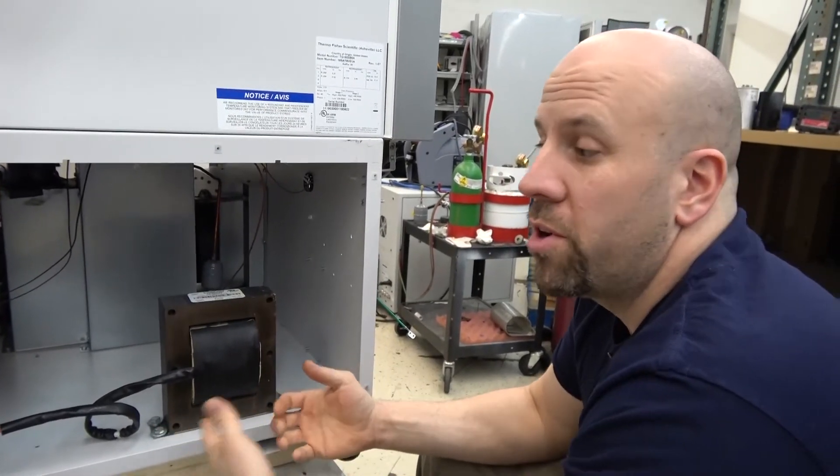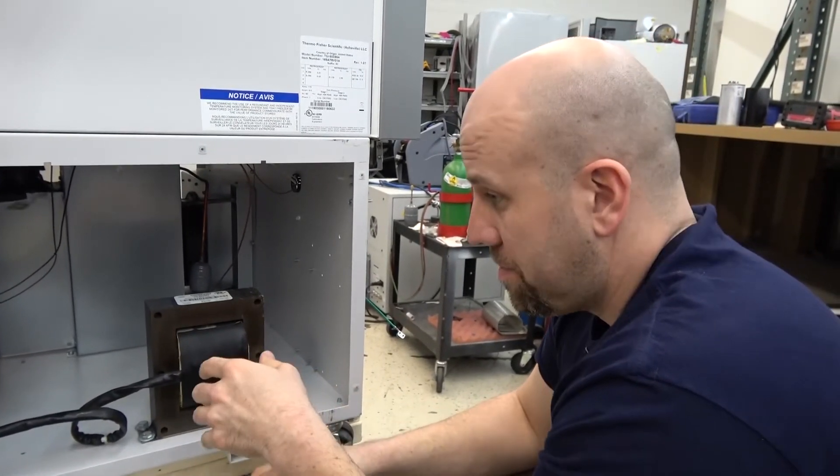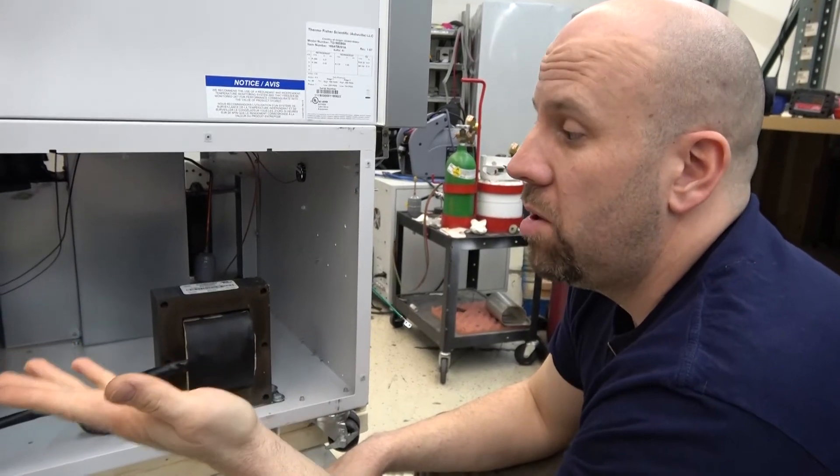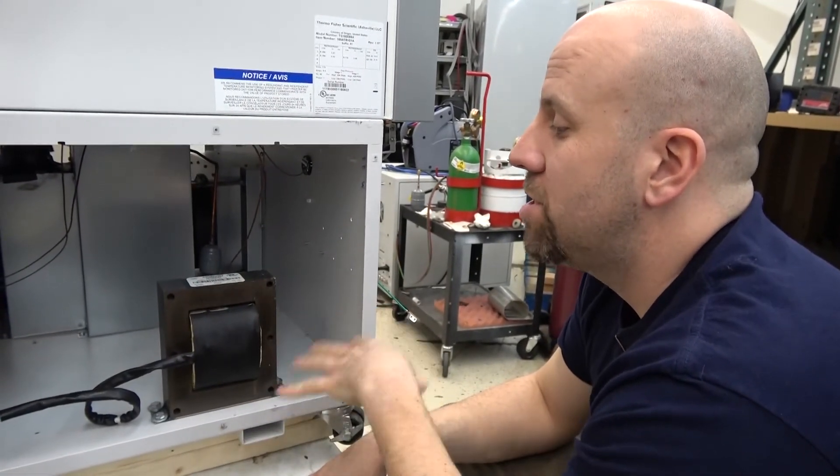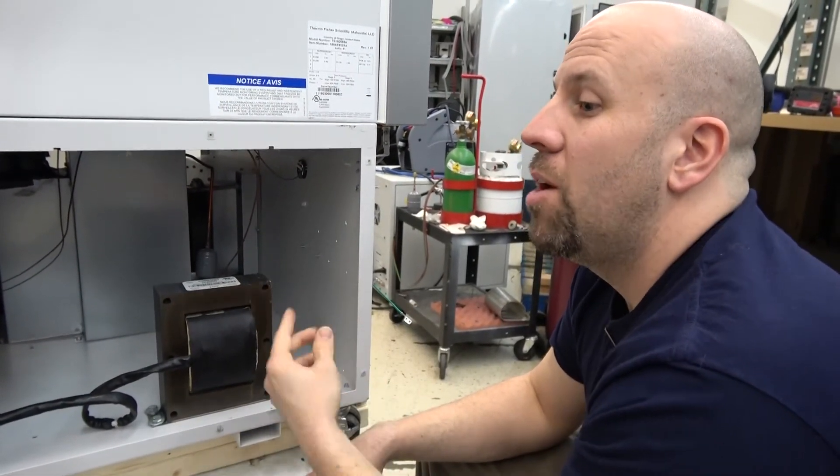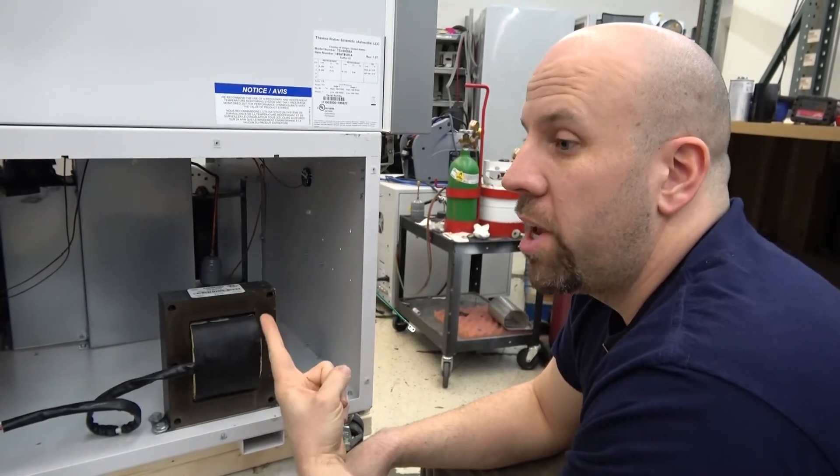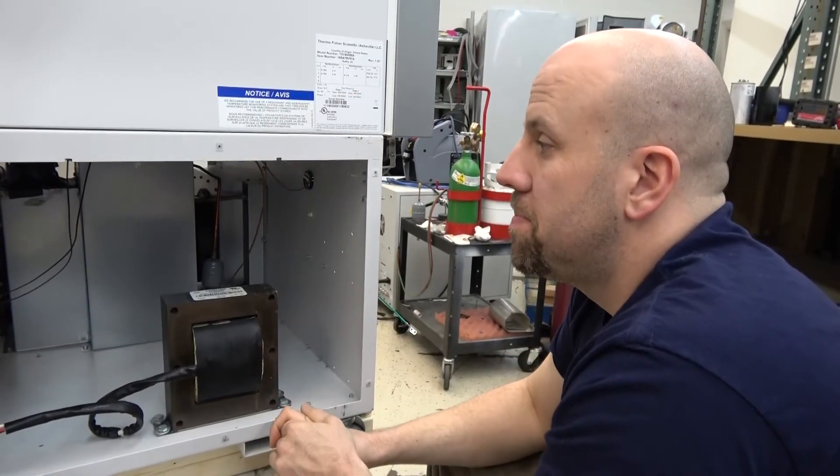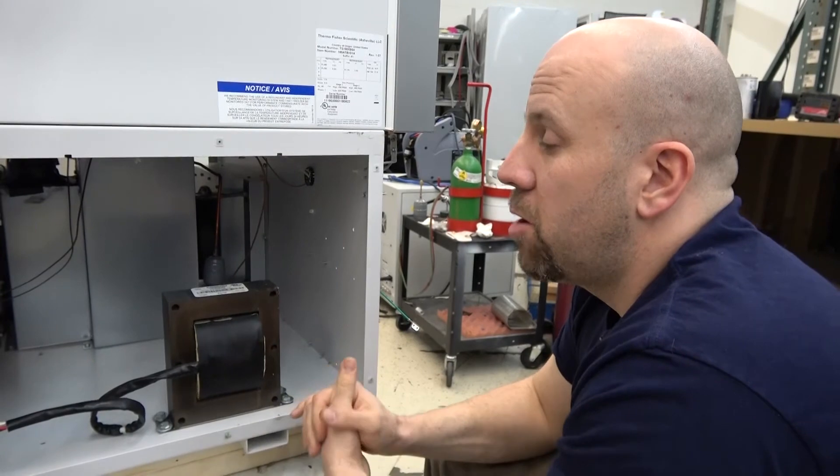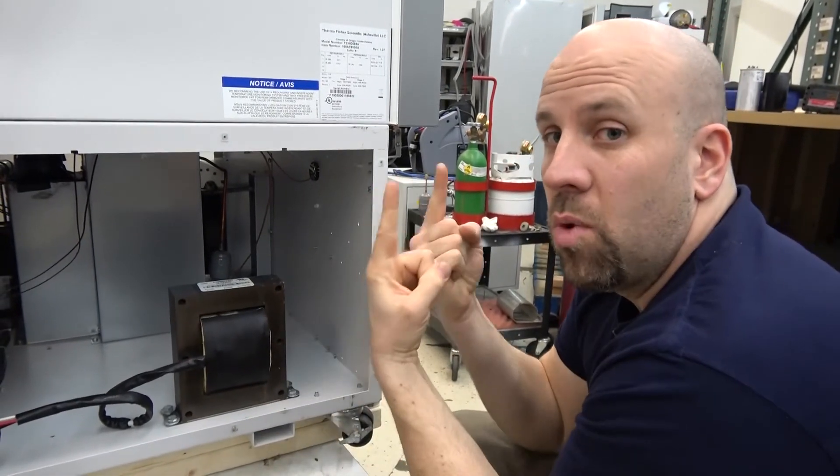Usually when Thermo does a 240 freezer, they just have a 240 right into the wall. Whereas with this, I believe they actually need a transformer to get a one wire 240 over to the variable speed drives. Whereas normally they have a two wire 240.